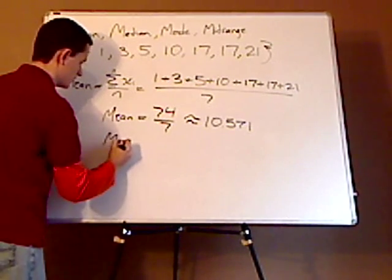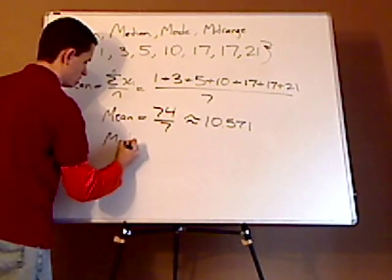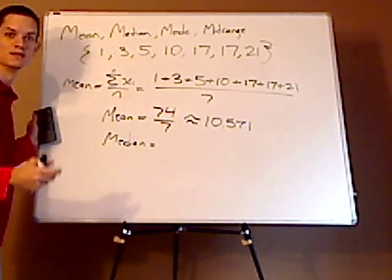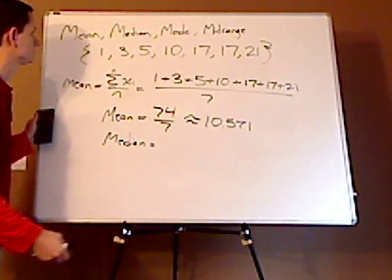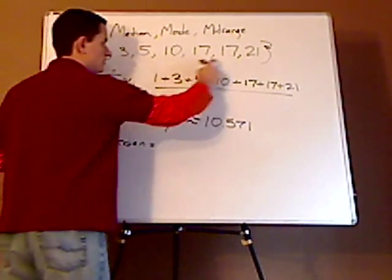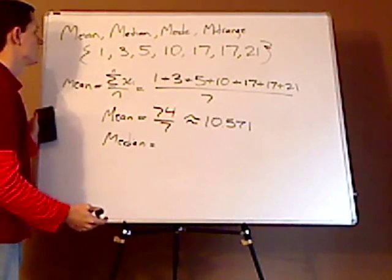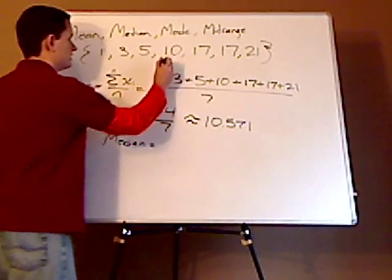Your median is, another way of saying median is middle number. So just arrange it in order. It already is, so I don't have to do that. The middle number is 10.